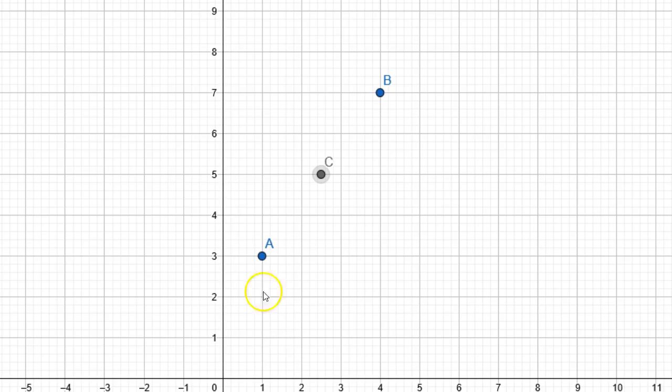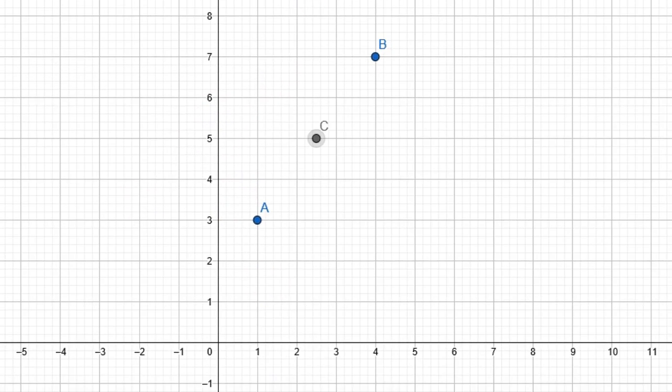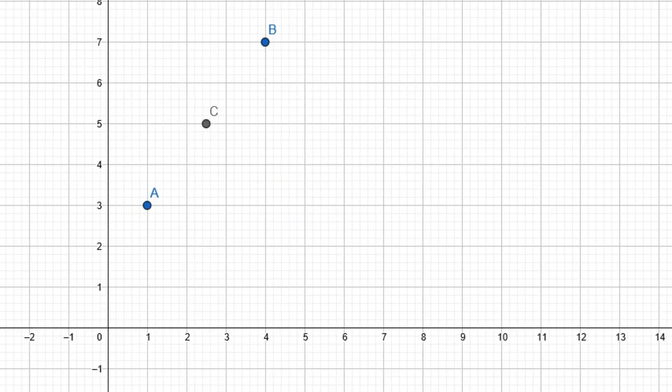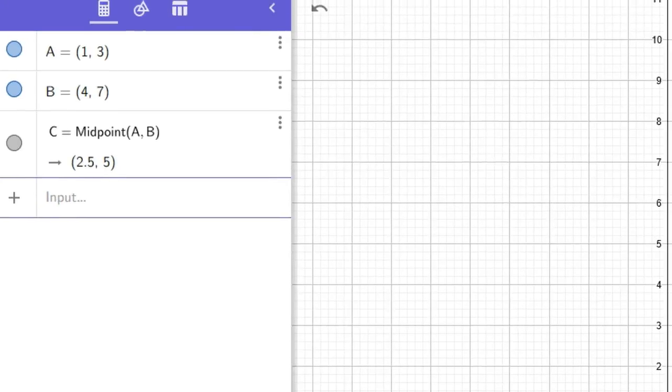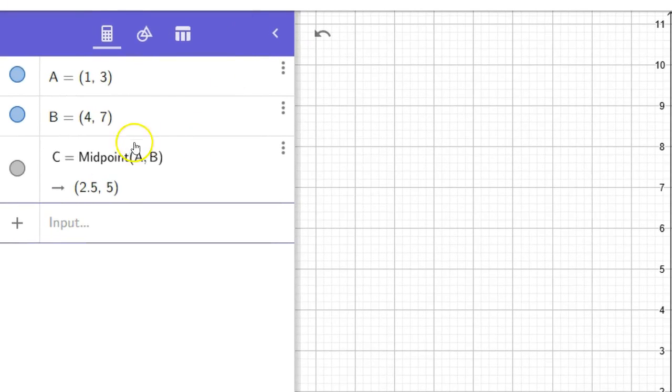And there it is. And you can see from the graph, let me slide this down just a little bit. It looks like two and a half comma five. You can also check in the algebra window, and you can see midpoint is indeed two and a half comma five. So, just a real quick one.